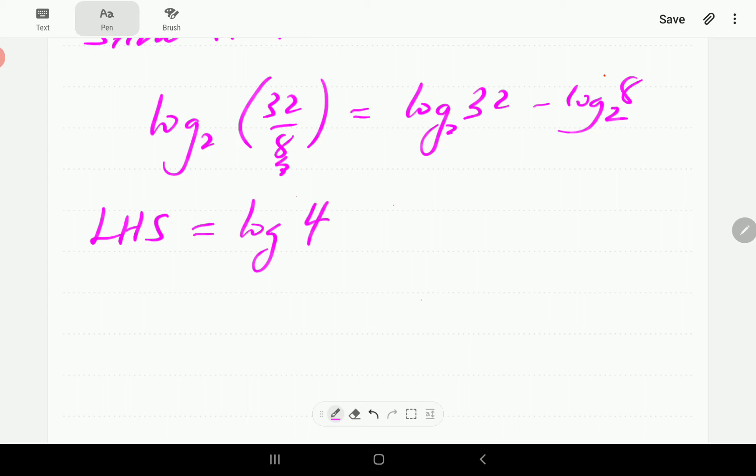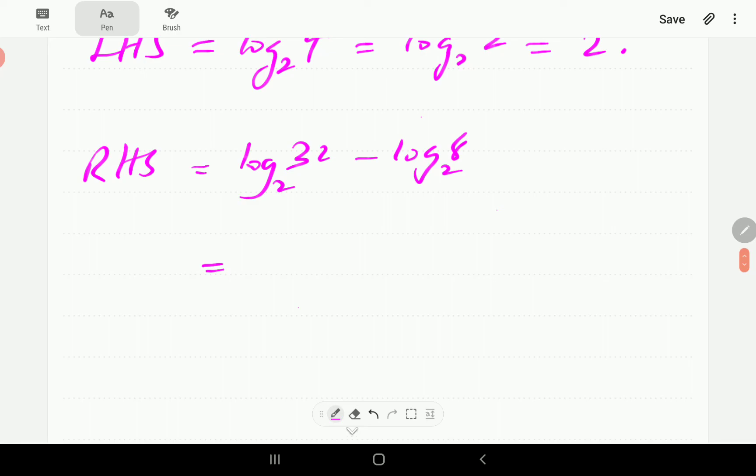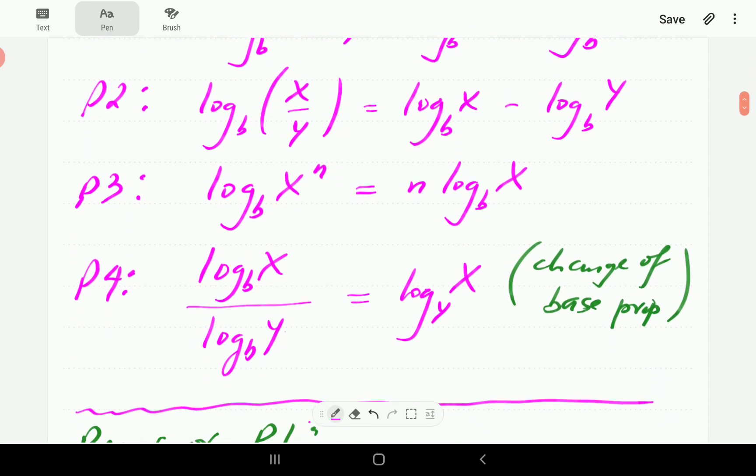So what we do is, first of all, we're going to work from the left-hand side. Now 32 over 8 is 4, so this works out to 4. And then 4 is 2 squared, so that means the log 2 to the power two base two is just going to be 2. Then from the right-hand side, log of 32 to base two minus log of 8—log of 32 to base two is saying to what power should we raise two to get 32, and that power is going to be 5. This one is saying to what power should we raise two to get 8, and that power is 3. And so that is going to give us 2.